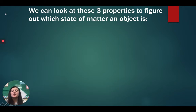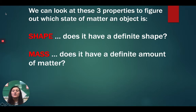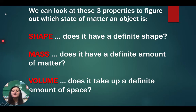We can look at three properties to figure out which state of matter an object is. First is shape — does it have a definite shape? When we look at a chair, just by looking at that shape, we know it's a chair no matter what. Next is mass — does it have a definite amount of matter? And lastly is volume — does it take up a definite amount of space in an area?